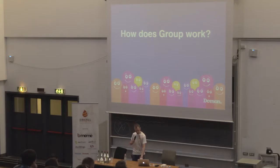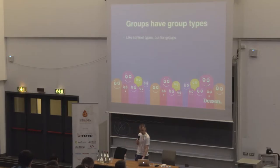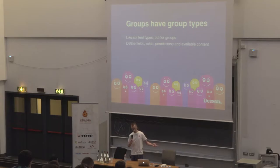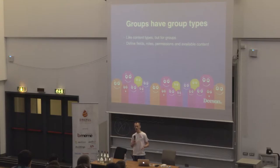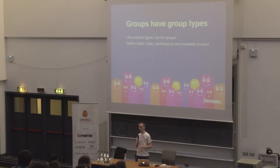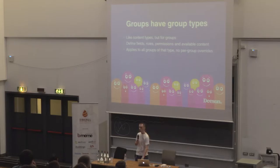Just to meet the 'sexier' criterion, here's a Flurp in a bikini. So how does Group work? Groups have group types. Group types are like content types, but for groups. They allow you to field groups, but they do so much more — they allow you to set roles, permissions, and available content for all groups of that type. Just like nodes of a specific node type follow the rules of that node type, the same goes for groups.